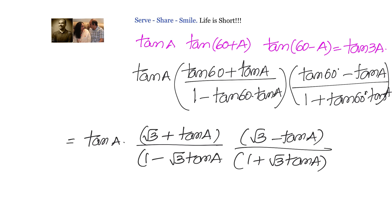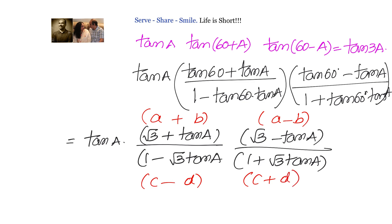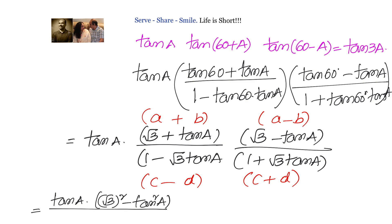Now what we have here is (a+b) multiplied with (a−b), and (c−d) multiplied with (c+d). We can use the formula (a+b)(a−b) = a²−b². So we write tan(a) into (√3)²−tan²(a) in the numerator, divided by 1²−(√3·tan(a))² in the denominator.